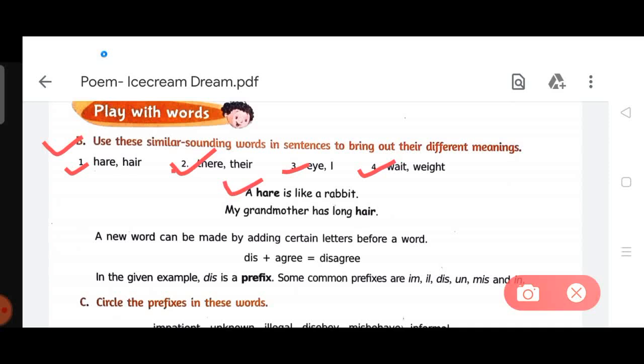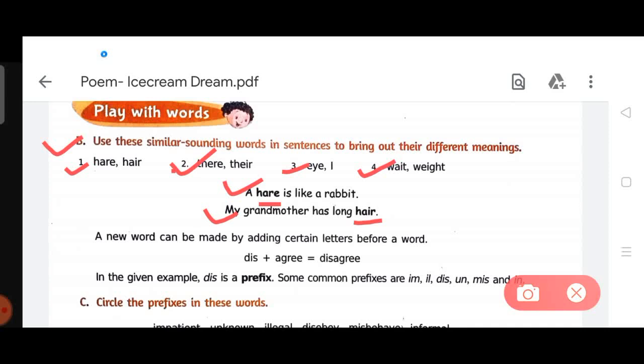Like here you can see first one: a hare is like a rabbit, my grandmother has long hair. In these both sentences the word hare, hair, here, pronunciation is same but the meanings are different. So this we have to do with your own.